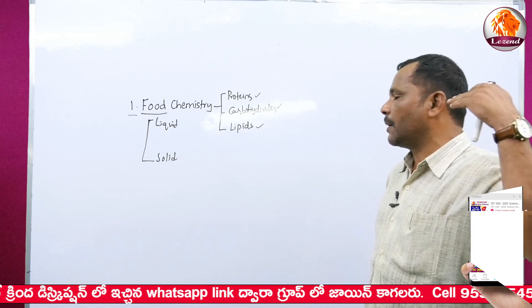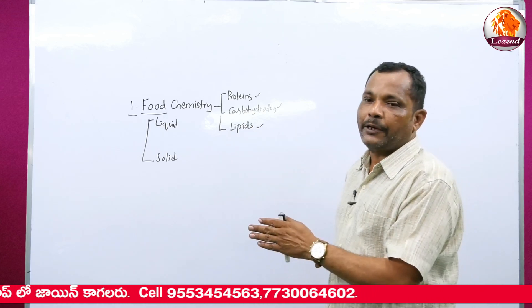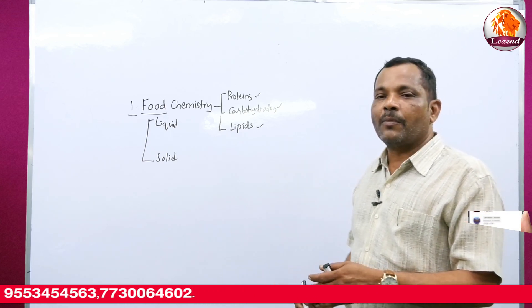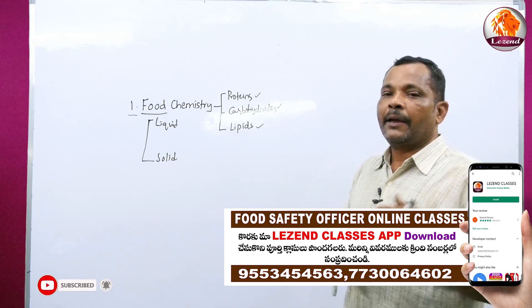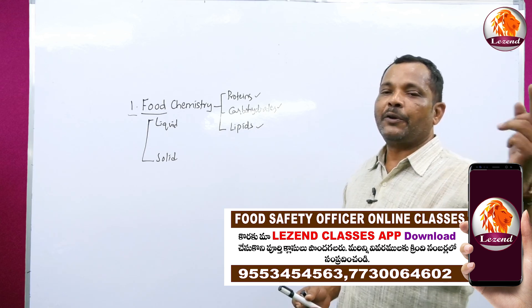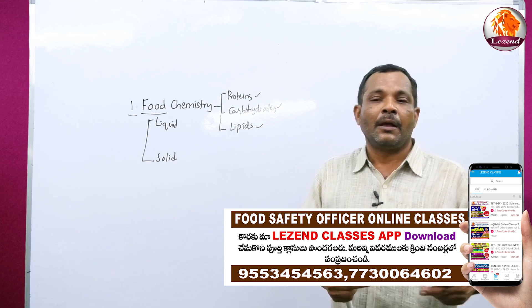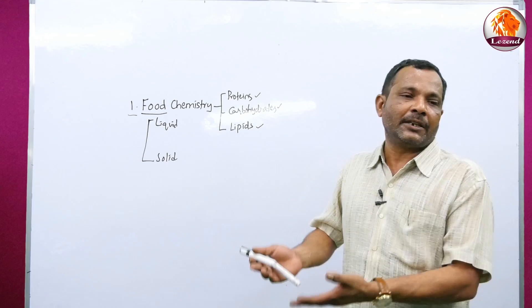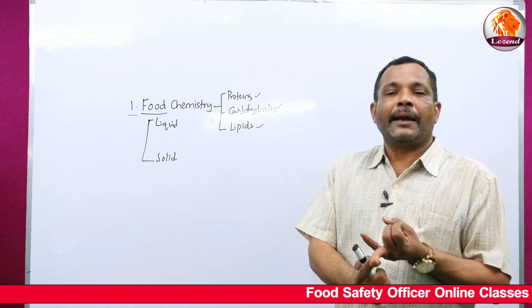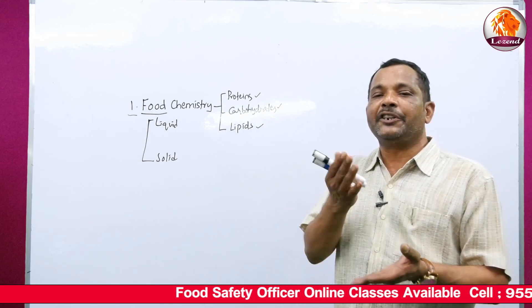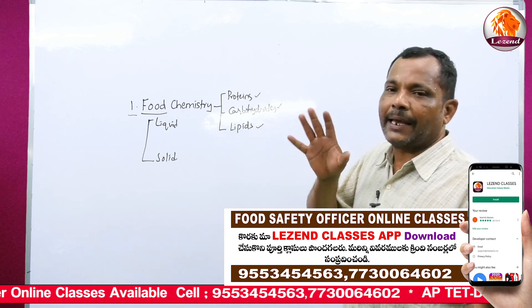In food chemistry we study the structure of proteins, carbohydrates, and lipids, as well as their function, usage, and nutritive value. The nutritional requirement differs based on the occupation and activity of an individual. For example, an athlete who runs 100 meters requires a different balanced diet compared to a person who sits in an AC room working on a computer. Activity and occupation define the type of diet you take.